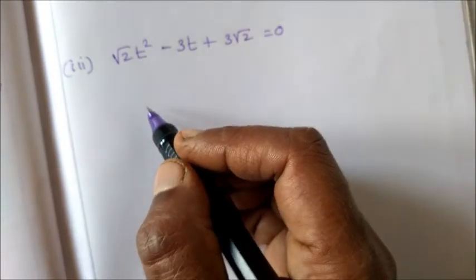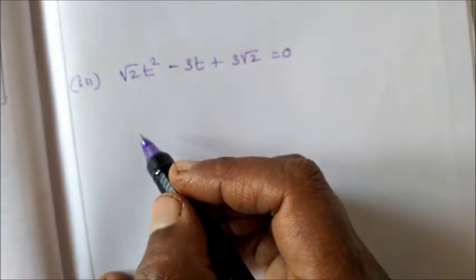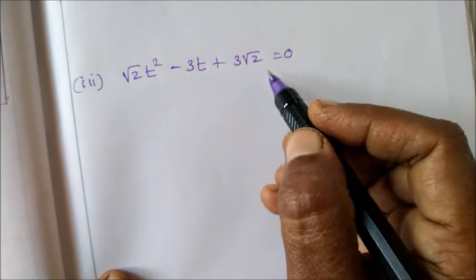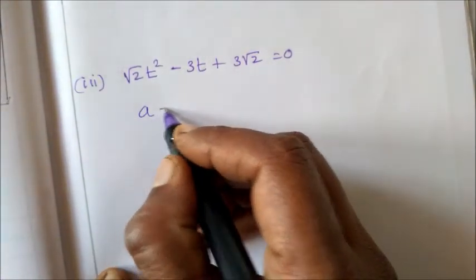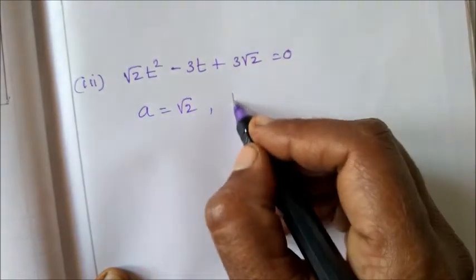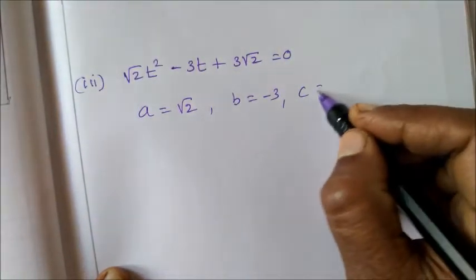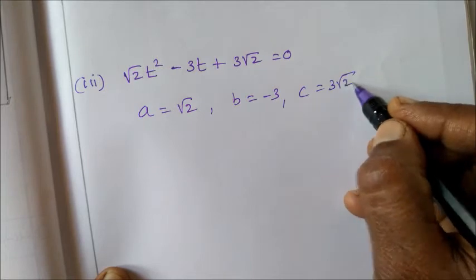Then next sum, third one: √2t² - 3t + 3√2 = 0. Quadratic formula. So a = √2, then b = -3, then c = 3√2.